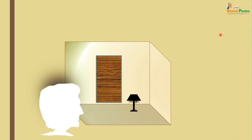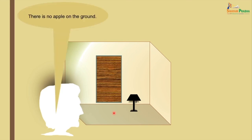Here is a room: the ground does not have any apple, and the subject cognizes 'there is no apple on the ground.' How is this cognition born? We are talking about the perception of absence.